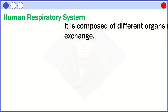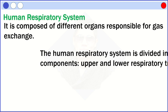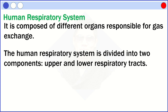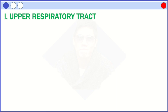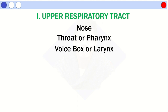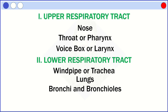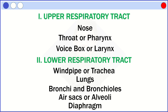Now, let's talk about the human respiratory system. It is composed of different organs responsible for gas exchange. The human respiratory system is divided into two components: the upper and lower respiratory tracts. The upper respiratory tract includes the nose, throat or pharynx, and voice box or larynx. The lower respiratory tract includes the windpipe or trachea, lungs, bronchi and bronchioles, air sacs or alveoli, and the diaphragm.